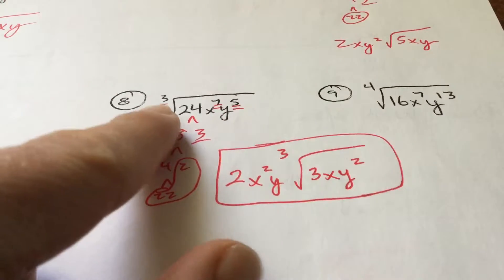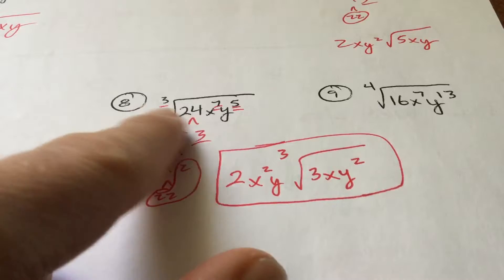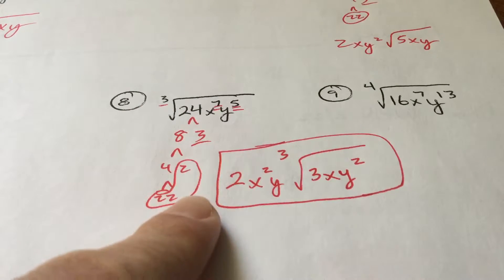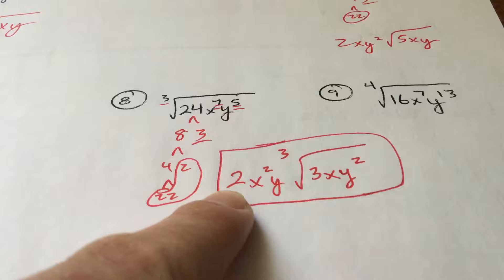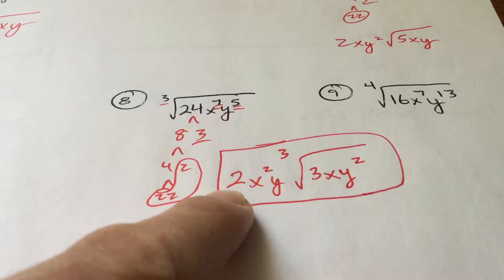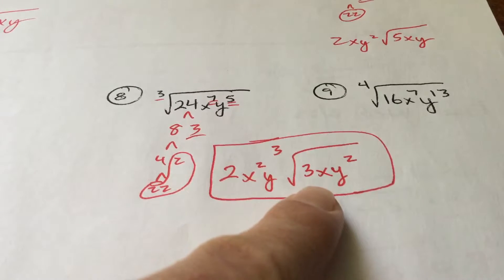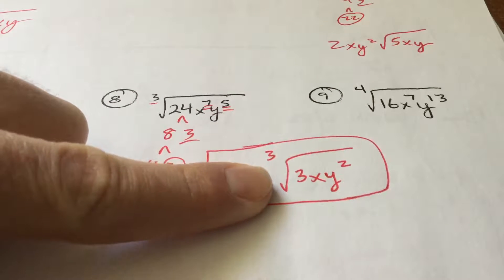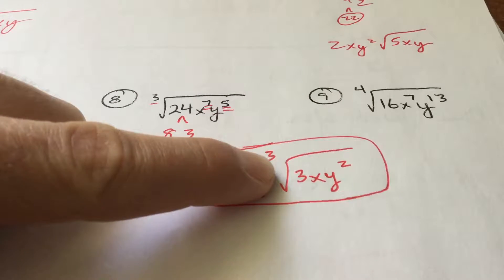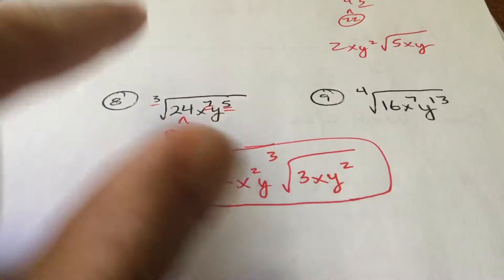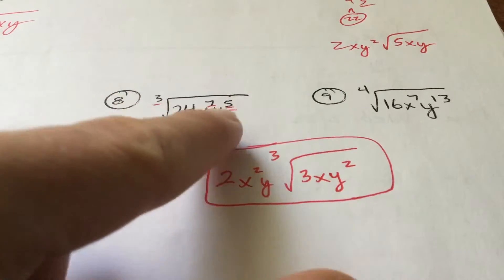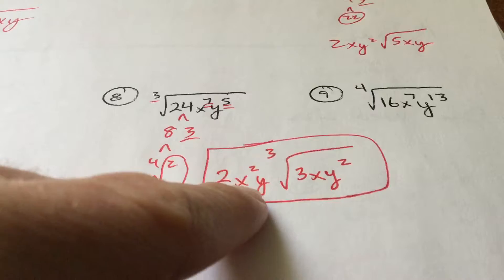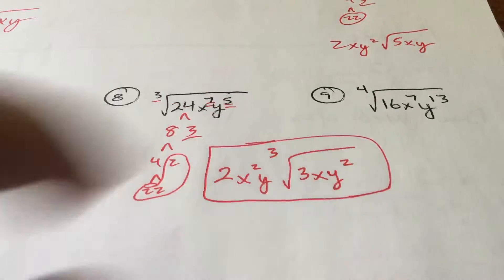Now I'm not looking for pairs, but I'm looking for triplets. I'm going to break 24 down as 2 times 2 times 2 — there's my triplet. It gets to go on the outside. What stays on the inside is 3. Unlike before, what's left over is not a square root but the third root, so make sure you put the 3 up there. 3 goes into 7 twice with 1 left over; 3 goes into 5 one time with 2 left over.